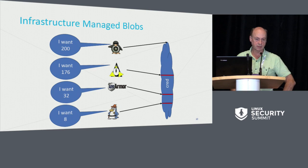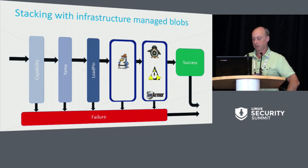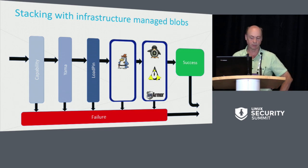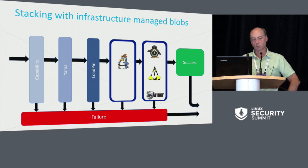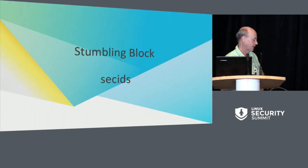If we do infrastructure-managed blobs, this solves some problems — we can pull Tomoyo out of the list of shared ones. But the rest of them we still have more issues. The next stumbling block are something called SecIDs.